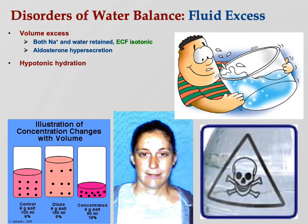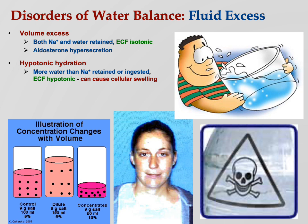Hypotonic hydration means more water than sodium is retained or ingested, making ECF hypotonic and causing cellular swelling. If you just start chugging water and keep drinking, you're going to increase the total volume of water in your extracellular fluid without changing the solutes. So now we're changing osmotic pressure — we are causing the ECF to become hypotonic, meaning low osmotic pressure, where the proportion of solutes is not as high as it should be relative to the fluid.